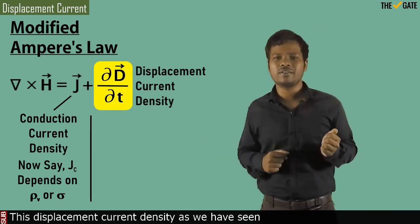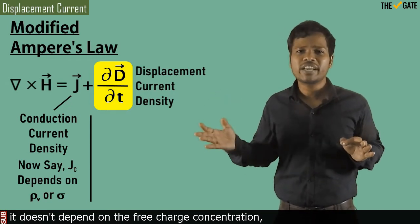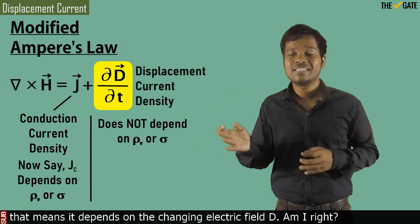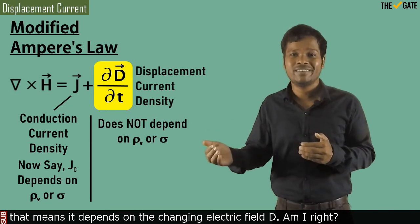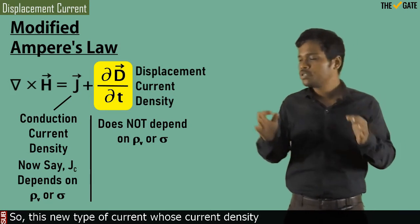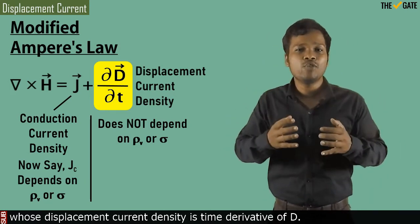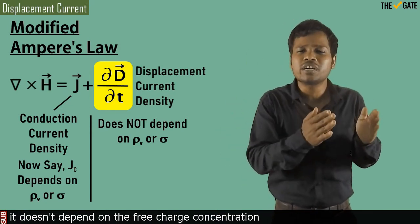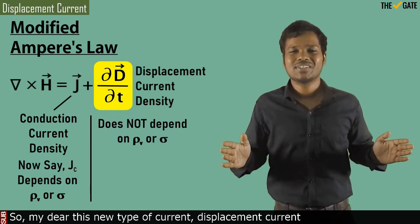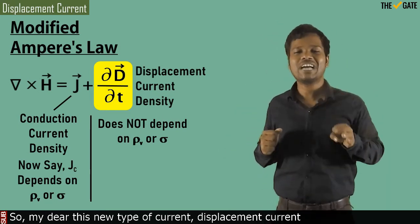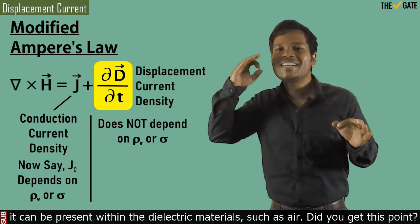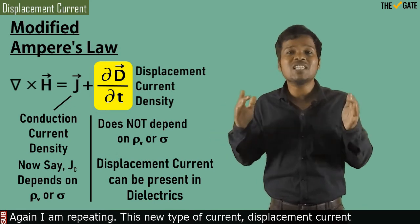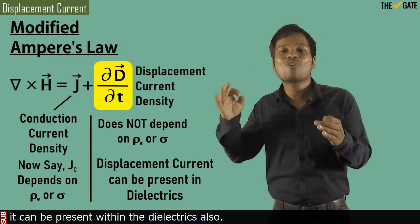This displacement current density, as we have seen, doesn't depend on the free charge concentration. It doesn't depend on the conductivity of the material. This displacement current density is the time derivative of D — meaning it depends on the changing electric flux density D. So this new type of current, whose displacement current density is the time derivative of D, does not depend on free charge concentration or the conductivity of the material. Therefore, this displacement current can be present within dielectric materials such as air.